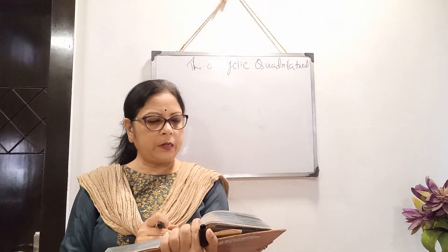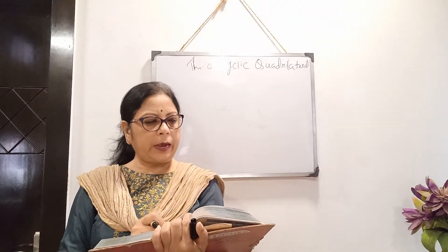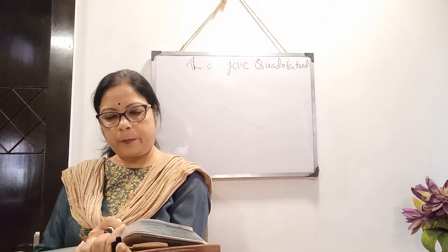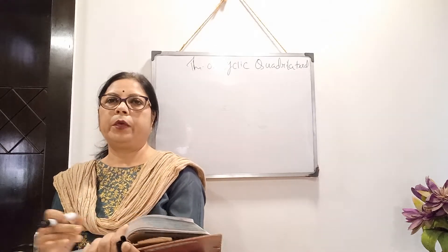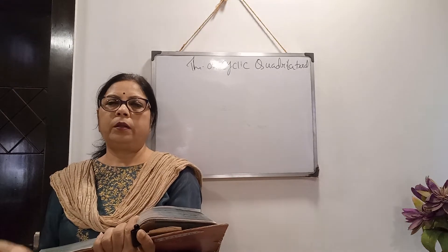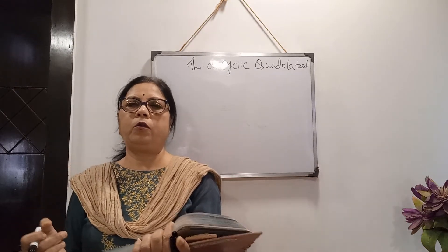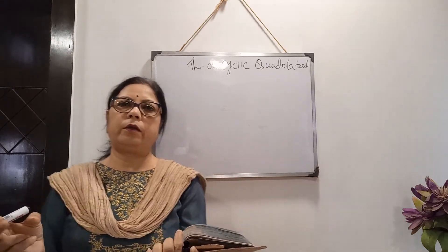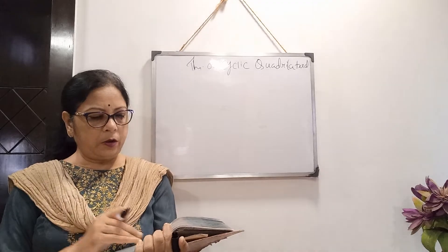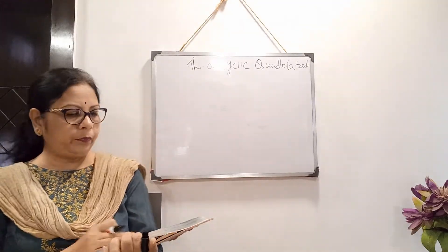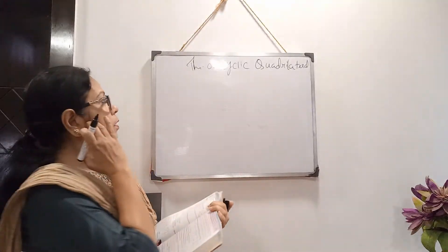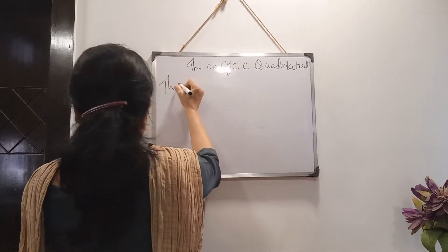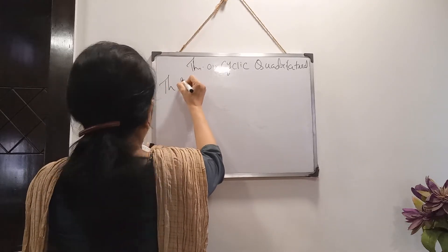We have to prove that the opposite angles of a cyclic quadrilateral are supplementary. Supplementary means the sum of any two angles is 180 degrees — each angle is called supplementary to the other angle. This is an important theorem — Theorem number 38.